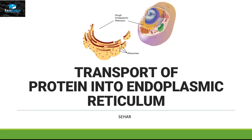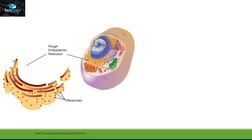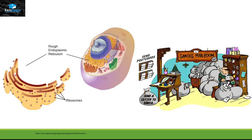Hello, this is Sahir from EZPZ and the topic we are going to discuss today is called transport of protein into endoplasmic reticulum. Endoplasmic reticulum is basically a kind of mail room in which proteins, lipids, carbohydrates, and even ions can enter, and then they will go into the sub-organelles from endoplasmic reticulum.